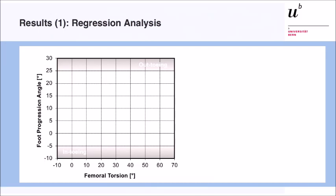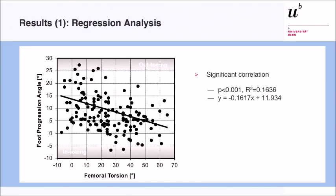Here is the regression analysis: an X-Y diagram with femoral torsion on the X axis and foot progression angle on the Y axis. Patients at the top have out-toeing; patients at the bottom have in-toeing. You would expect patients with high torsion to show in-toeing, and we did observe this. There was a statistically significant correlation with a high p-value, but if you look closely the correlation coefficient is extremely weak. There is a trend — significant relative to random distribution — but to me this is not clinically relevant.